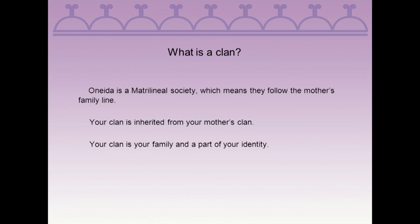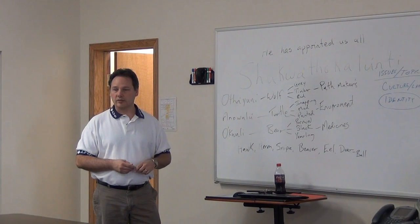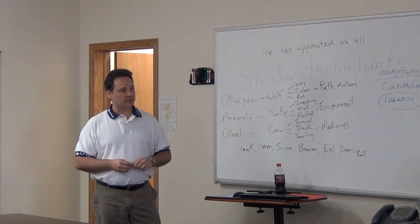What is a clan? Oneida is a matrilineal society, which means it follows your mother's line. My mother is non-tribal, so that link between clanship is actually lost. We'll get into explanations of how you can reestablish a clan through adoption. As far as my clan, it's actually broken because my dad is tribal and my mom is non-tribal, so I was adopted into the wolf clan and I have a wolf clan name as well. You go through ceremony for the naming, getting your Oneida name.